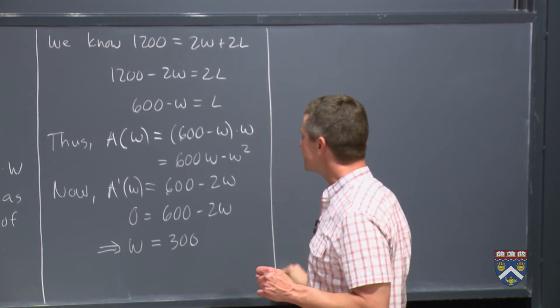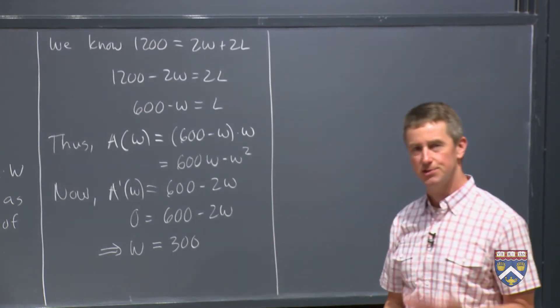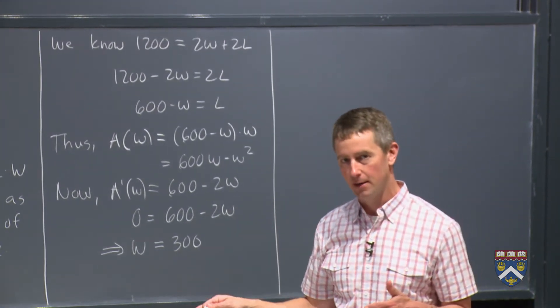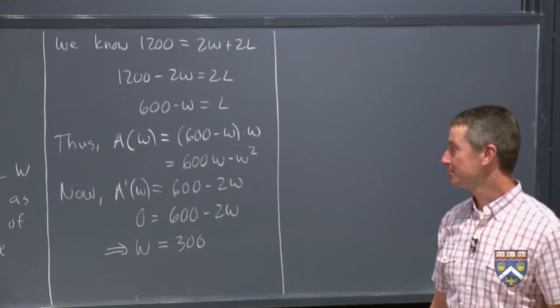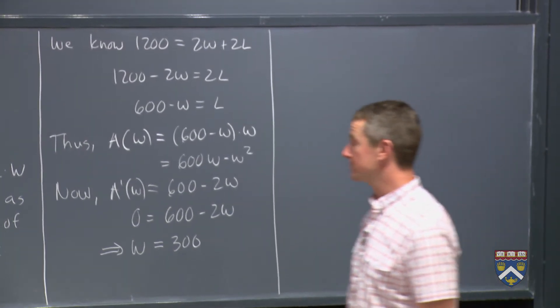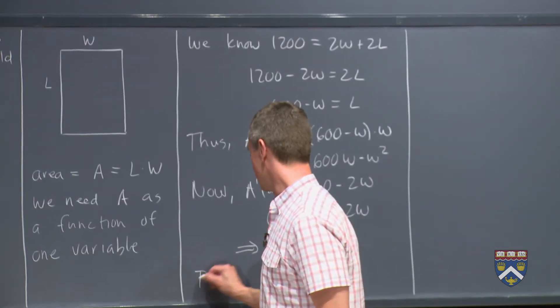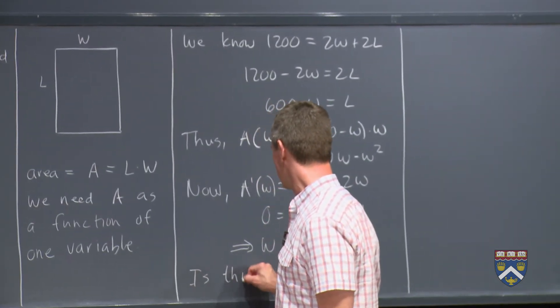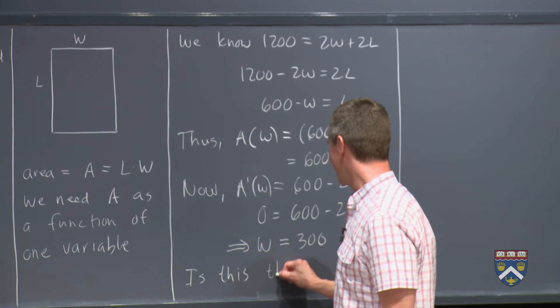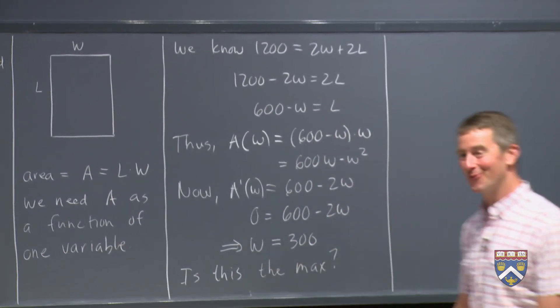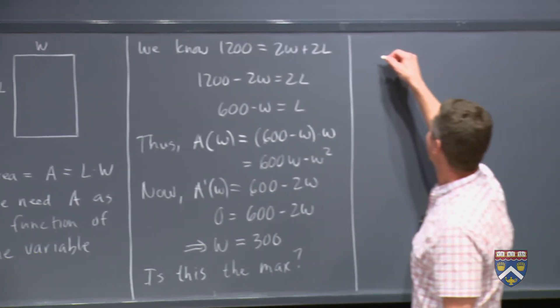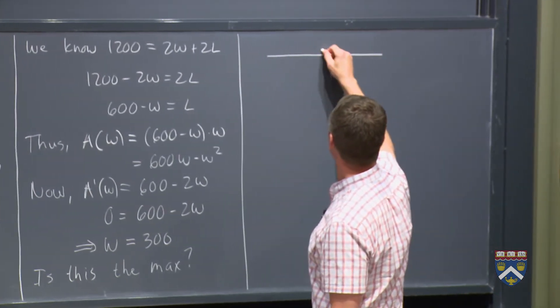Now we're still not sure though. This might be, what are we supposed to do now? After we find the critical point, we're supposed to do one more thing before we just say this is the answer. We're supposed to check to see if this is the max. So is this the max? For all that we know, this could be the min. This could be the way to give the animals the least amount of room. We want to make sure this is the maximum. And so for that, we do our normal number line.